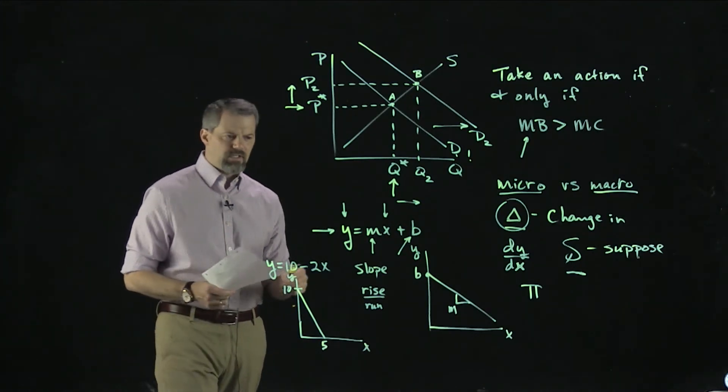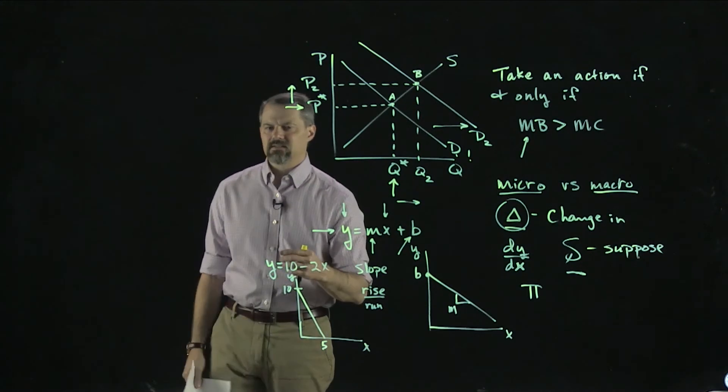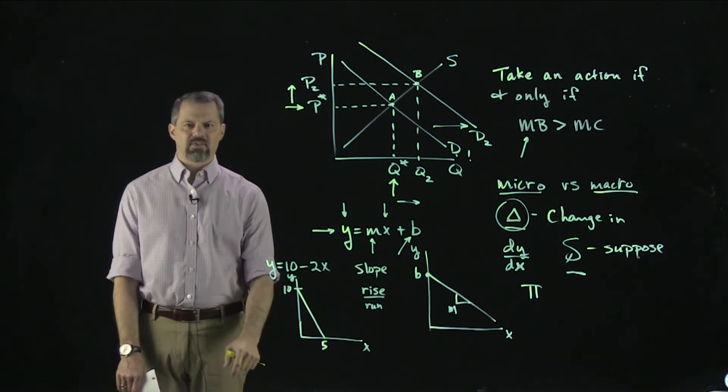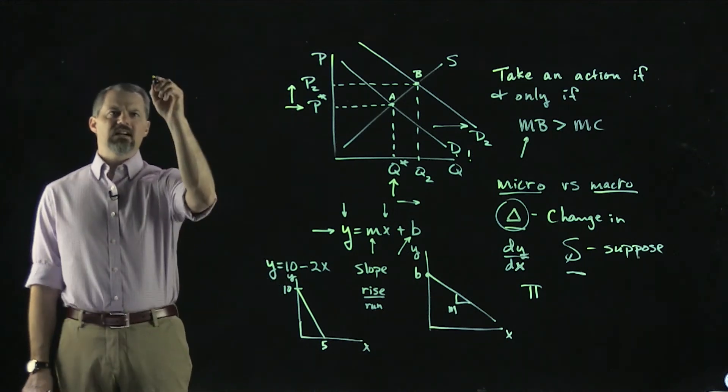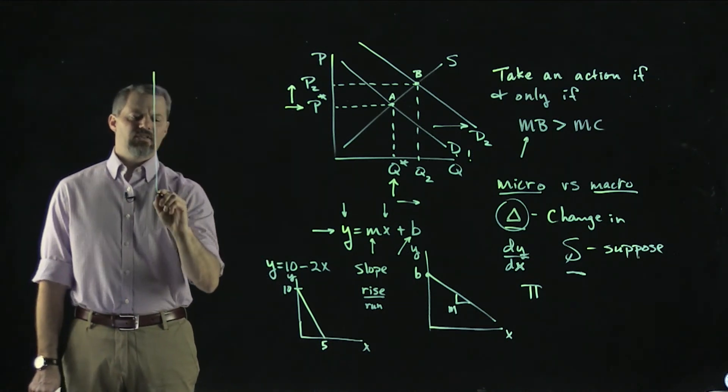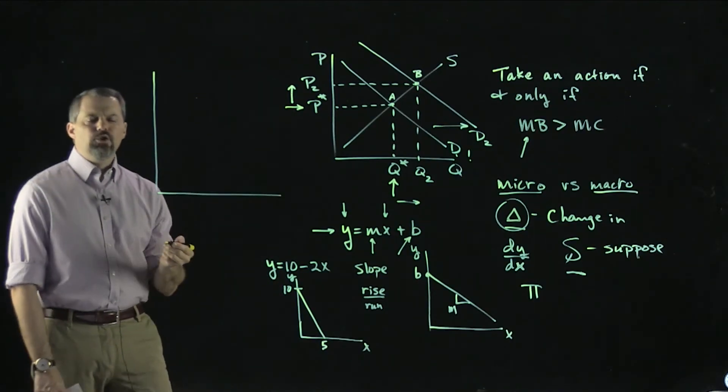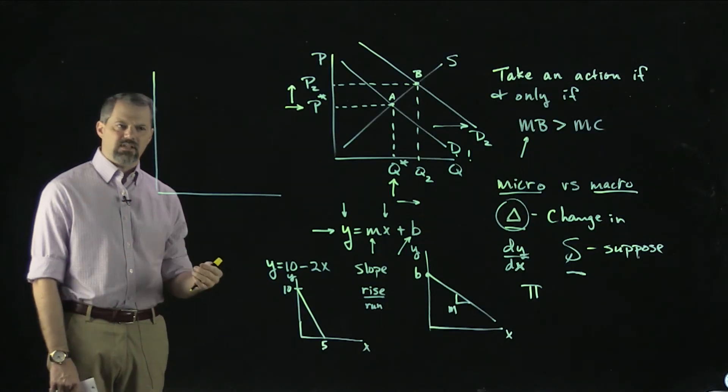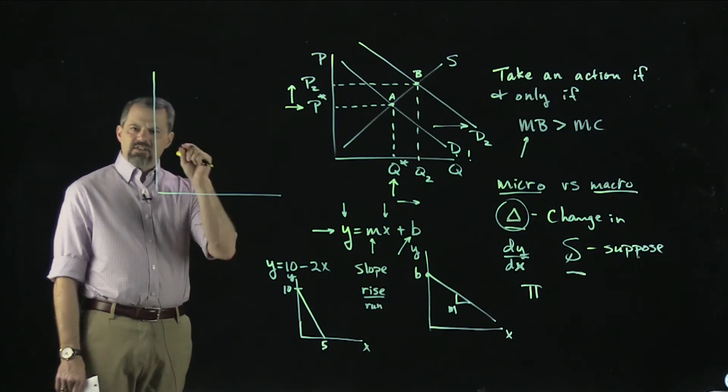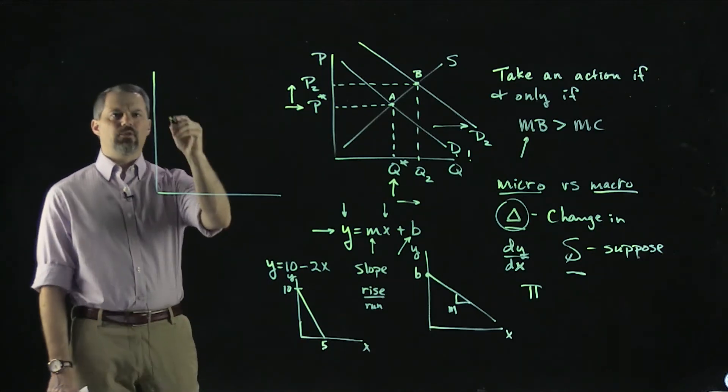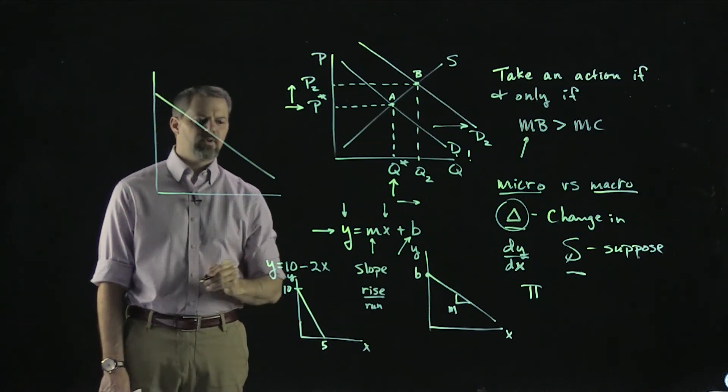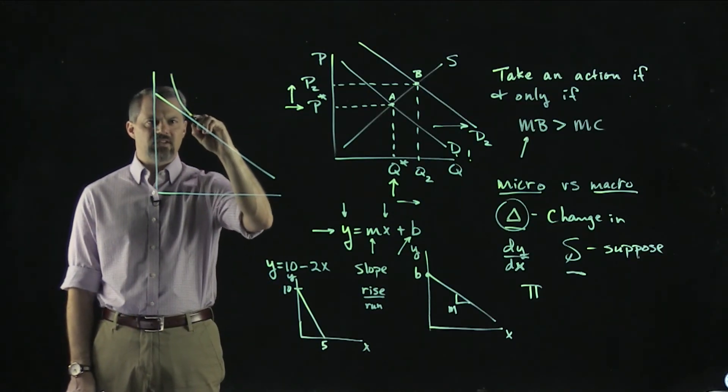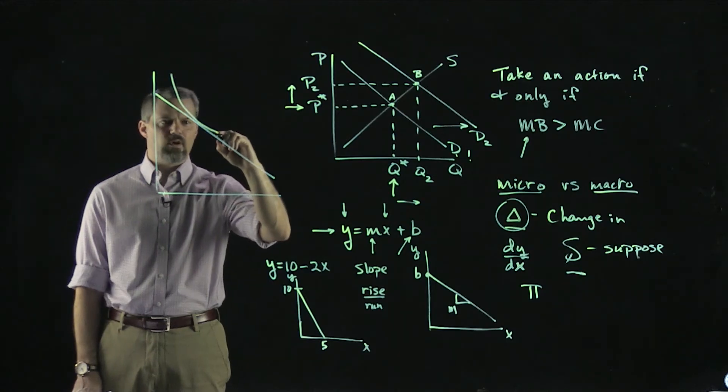Another concept we're going to be thinking about in this class that you would have seen a little bit in a principles class is the concept of tangency. Let's review what that means. For two geometric objects to be tangent to each other, that means their slope at one point is going to be equal. If we think about a line and then a curve that's just tangent to it, it comes down and touches in one place.